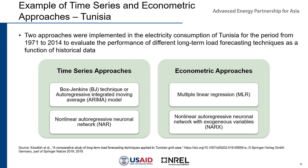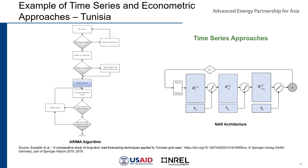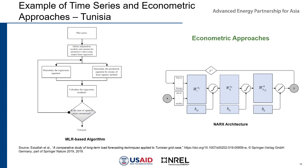The next slides present studies from the literature and industrial practices on long-term load forecasting approaches. The first example is a study done in Tunisia to evaluate the performance of selected time series and econometric techniques for long-term forecasting. These are Box-Jenkins or ARIMA, which stands for autoregressive integrated moving average; NAR, or nonlinear autoregressive neuronal network; MLR, or multiple linear regression; and NARX, or nonlinear autoregressive neuronal network with exogenous variables. Flowcharts of the time series approaches show the ARIMA algorithm and NAR architecture, while the econometric approaches show MLR-based algorithm and NARX architecture.